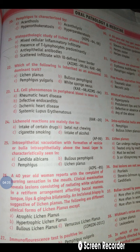In question 24, the cause was drugs, so option A is correct. Question 25 asks about intraepithelial vacuolation with formation of vesicles or bullae intraepithelially above the basal layer. Whenever a question involves intraepithelial formation of bullae and vesicles in the jaws, the answer is pemphigus. So the answer is option C for question 25.